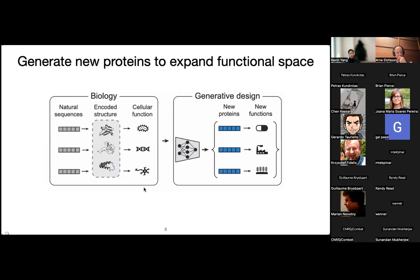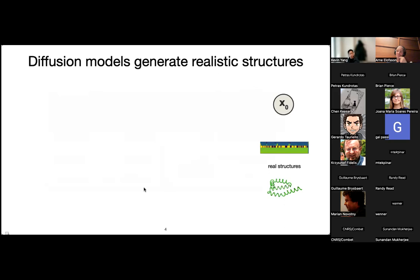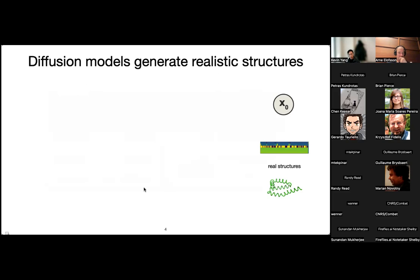Recently there's been a lot of interest in using a family of models called diffusion models. They started out being used for images, for computer vision, and people like them because they generate high-quality images and they don't suffer from a problem called mode collapse — meaning that previous kinds of deep generative models would often train on many images, and then when you generate, there are just certain classes of images that almost never showed up in their generations. Whereas these diffusion models cover all parts of the training distribution much better.